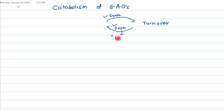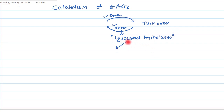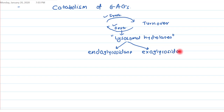This destruction process is carried out by lysosomal hydrolysis. There are basically two types of lysosomal hydrolases: one is endoglycosidase and the other is exoglycosidase.